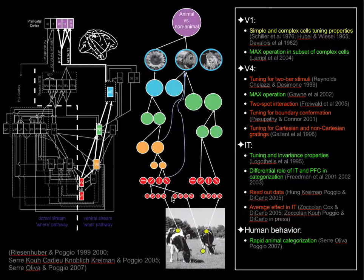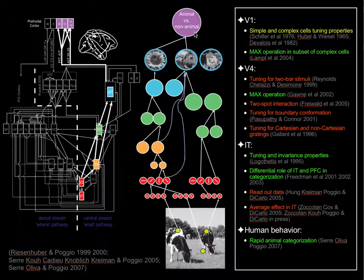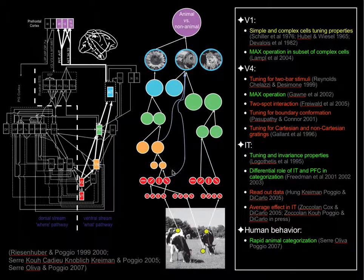As information progresses through the layers, the receptive field becomes bigger, representing more and more of the image — up to a big chunk of the image in IT. Each one of these models is a hierarchical model where a neuron in V1 gets input from a small set of cells, a neuron in V2 gets input from all of those cells, and so on. Information is aggregated more and more into larger portions of the image in a hierarchical pyramid model.